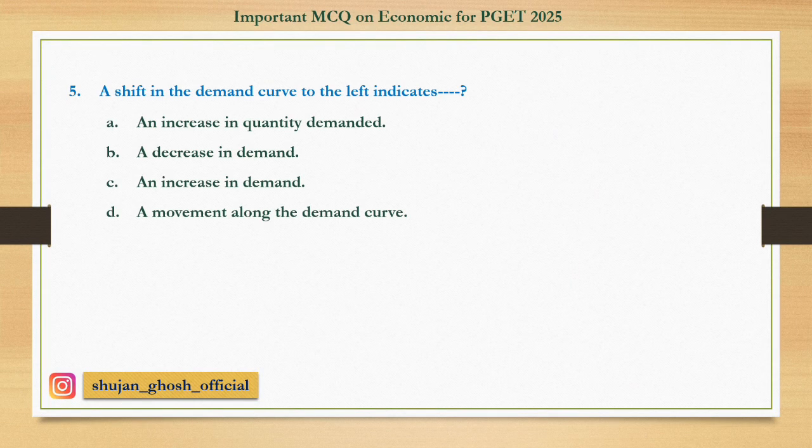Question number five: A shift in the demand curve to the left indicates — option A: an increase in the quantity demanded; B: a decrease in demand; C: an increase in demand; D: a movement along the demand curve. Answer: a decrease in demand.